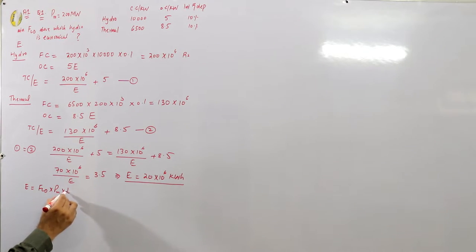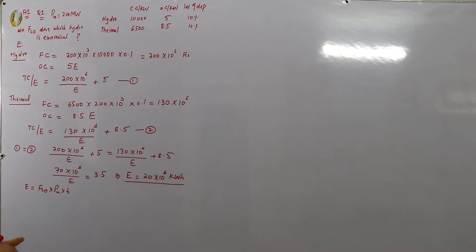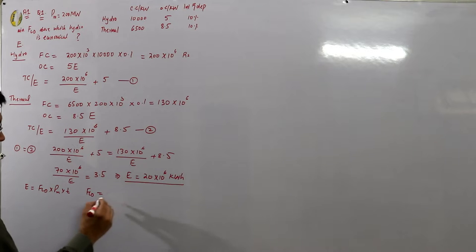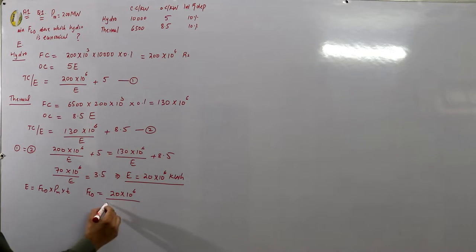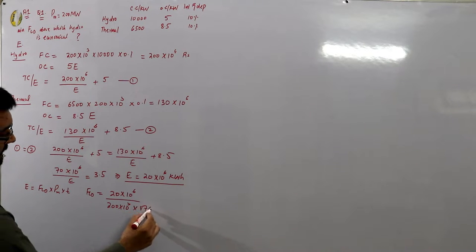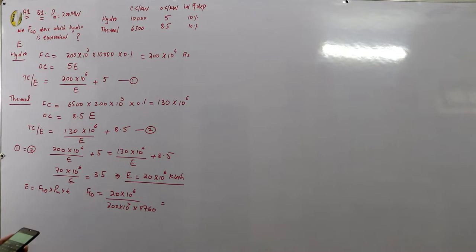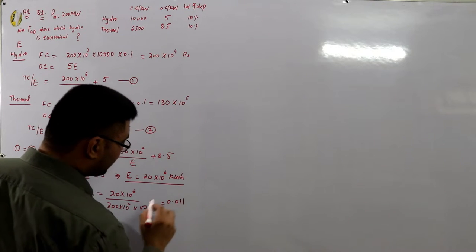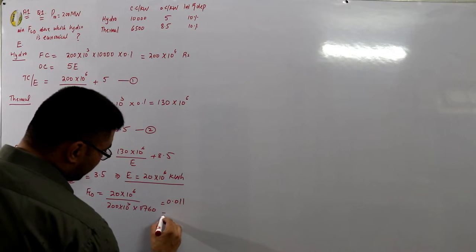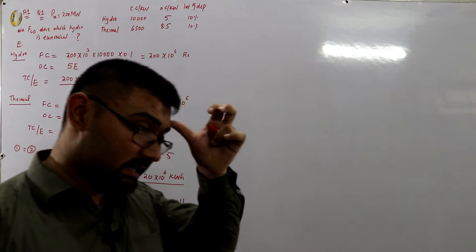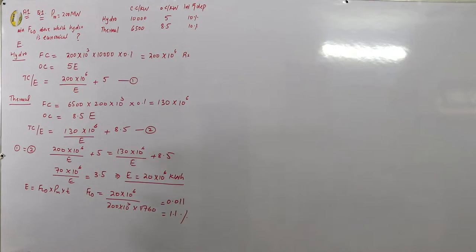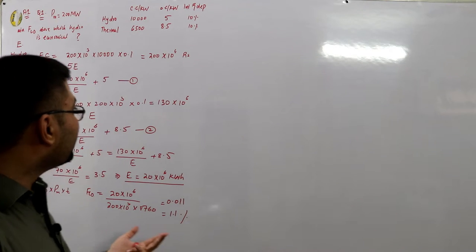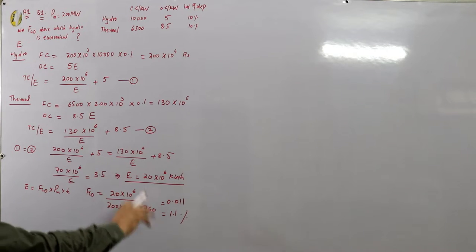Now, E = load factor × maximum demand × time, on a yearly basis. So load factor = E / (maximum demand × time) = 20 × 10^6 / (200 × 10^3 × 8760). This comes out to approximately 0.011, or 1.1%. This appears to be incorrect — the calculation procedure is right, but the given values may be fictitious, which could be the source of the error.